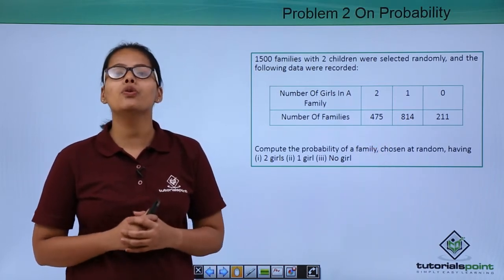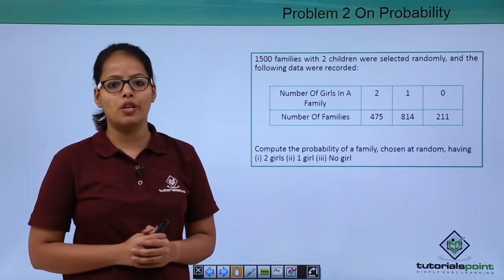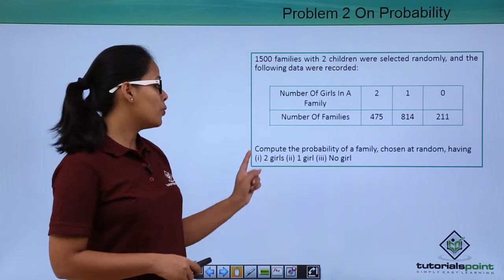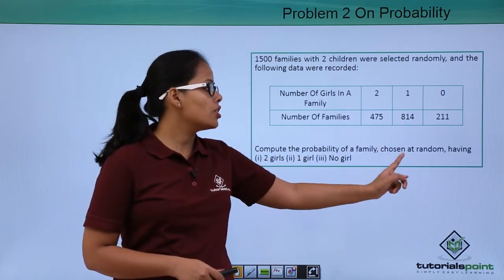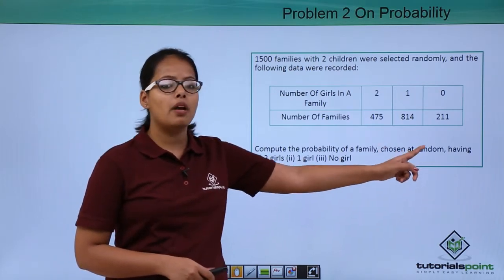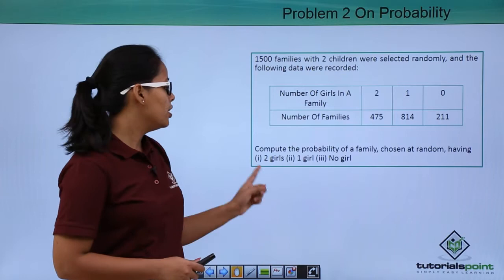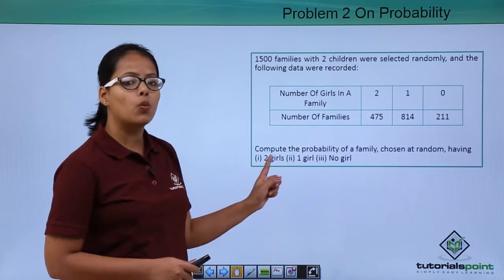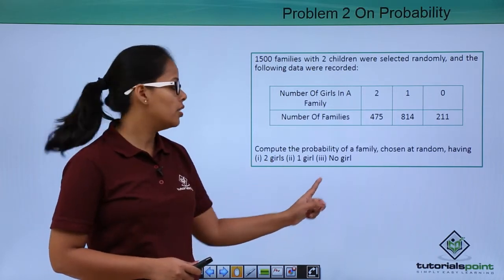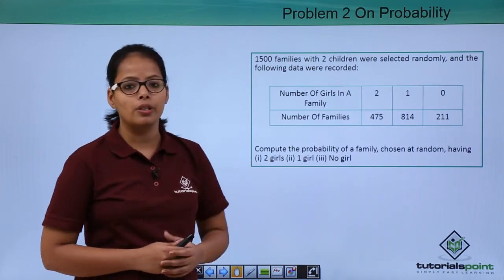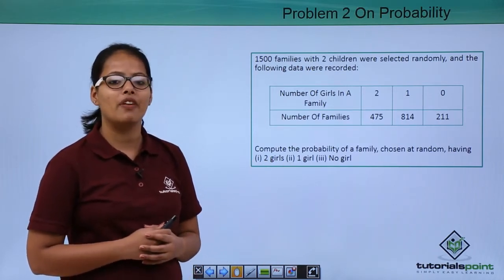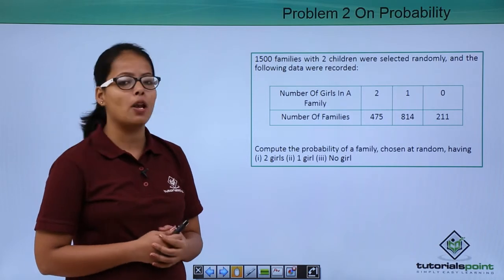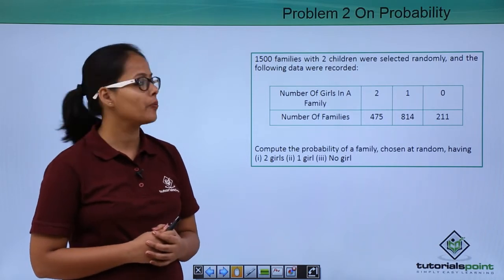Now what you need to find out here: compute the probability of a family chosen at random having two girls, one girl, and no girl. Let's see how you're going to evaluate these values.